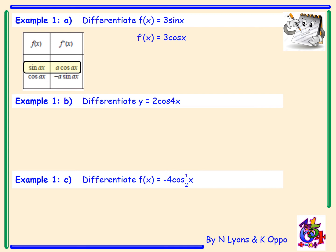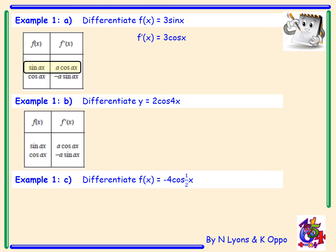Example 1b: differentiate y = 2 cos 4x. Looking at our table of standard derivatives, the derivative of cos ax is minus a sin ax. So dy/dx — watch your notation, keep it consistent — the 2 we leave alone, and cos 4x becomes minus 4 sin 4x. Tidying up: dy/dx = -8 sin 4x.